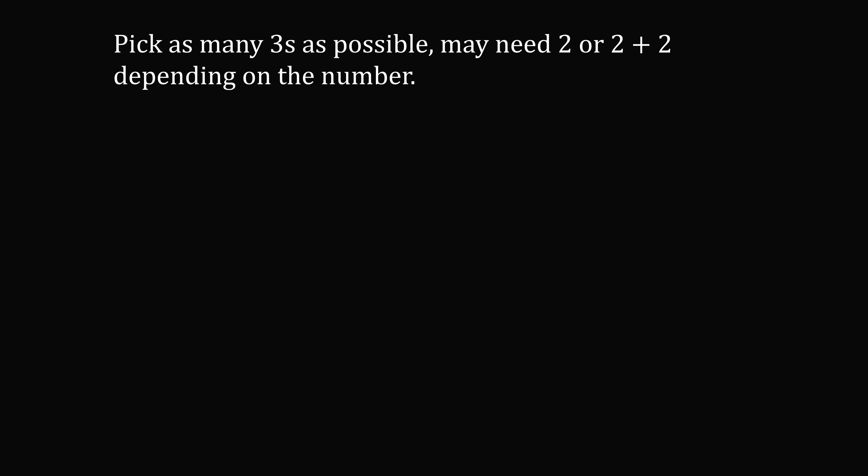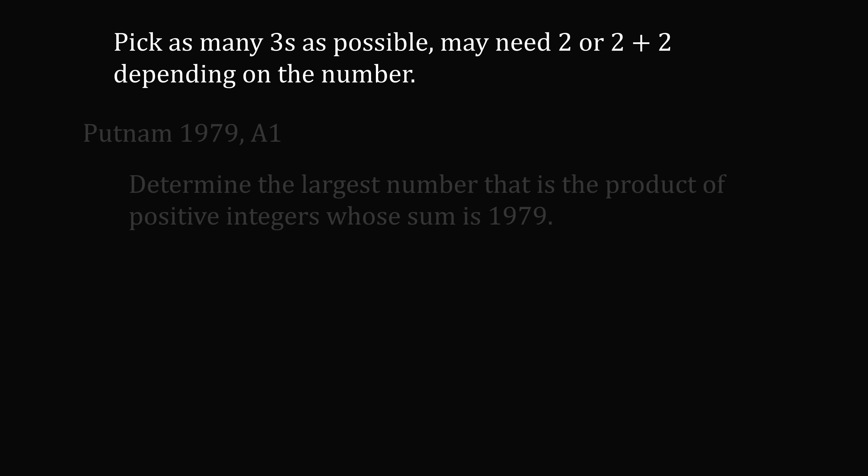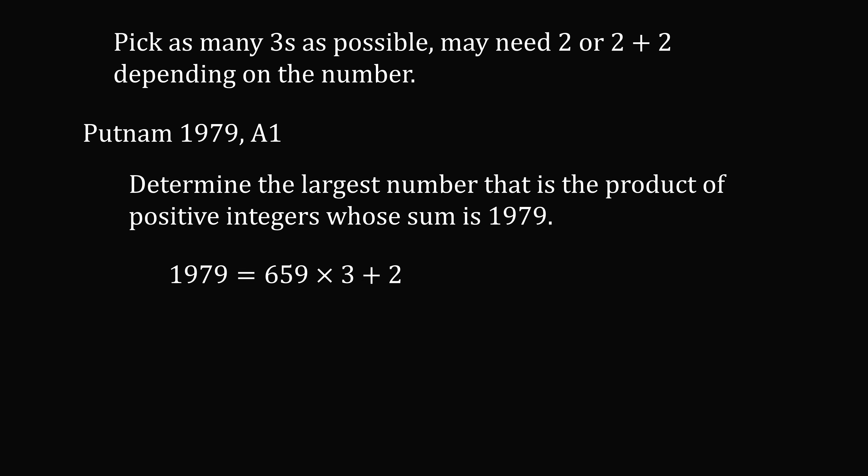So now let's solve the International Mathematical Olympiad problem. So we need to figure out this problem for 1976. Now 1976 equals 658 multiplied by 3 plus 2, so we have a remainder of 2. So P will equal 2 multiplied by 3 to the power of 658. To solve the Putnam problem, this is 3 more, so 1979 equals 659 multiplied by 3 plus 2. So P equals 2 multiplied by 3 to the power of 659. So that solves the problems.